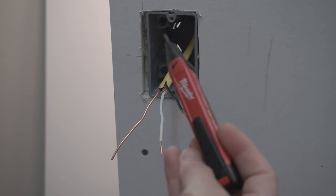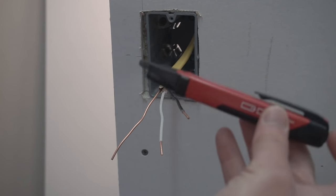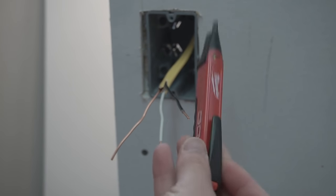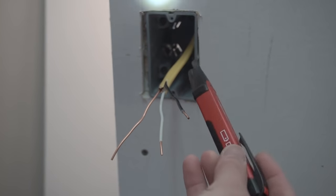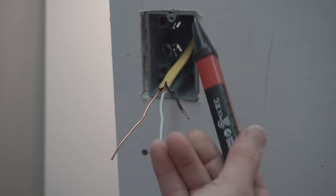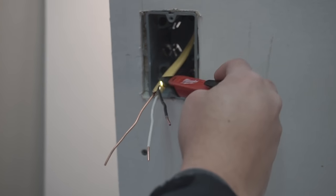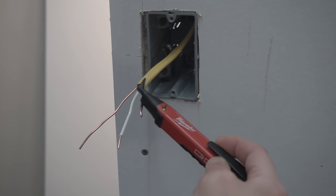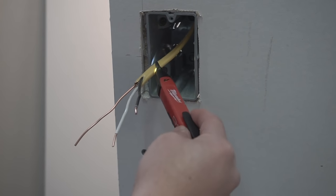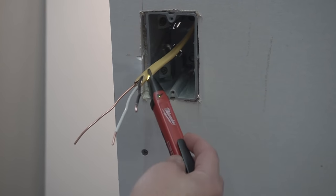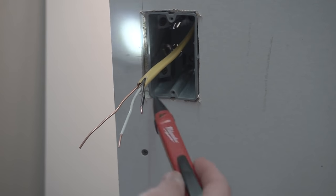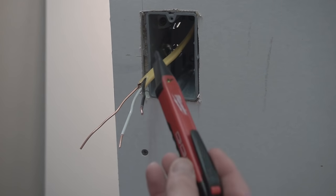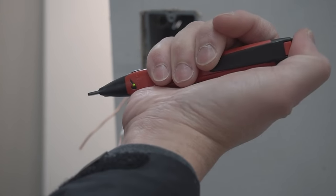The main tool I highly recommend is this voltage detector by Milwaukee. Even though you turn off the power from your breaker, I like to use this as my backup to make sure there's no electrical current or power coming through. Just touch it—if it starts beeping red, there is power. Get this tool.